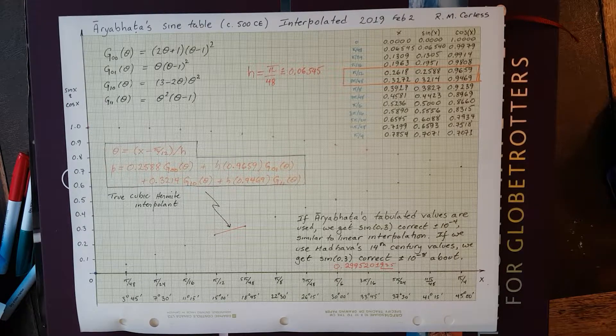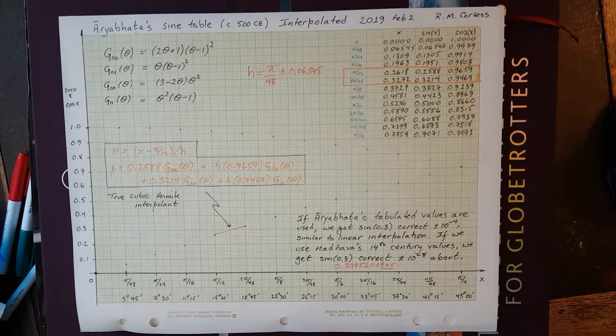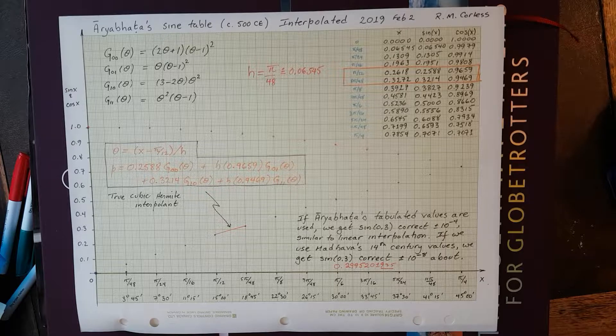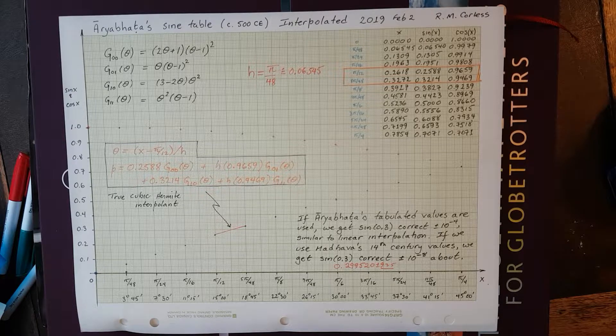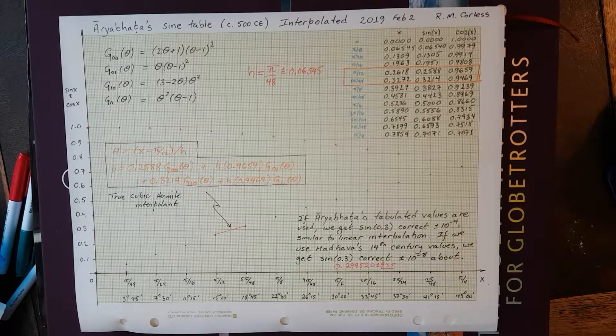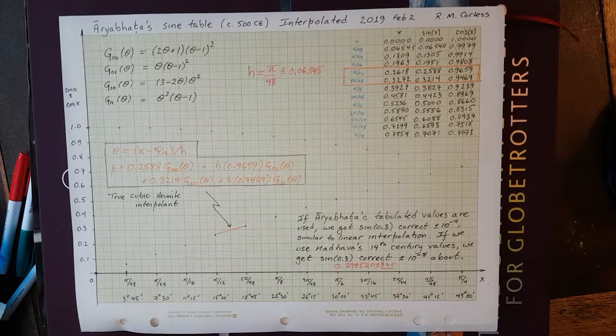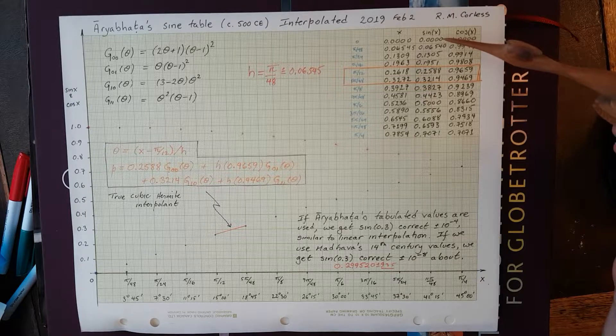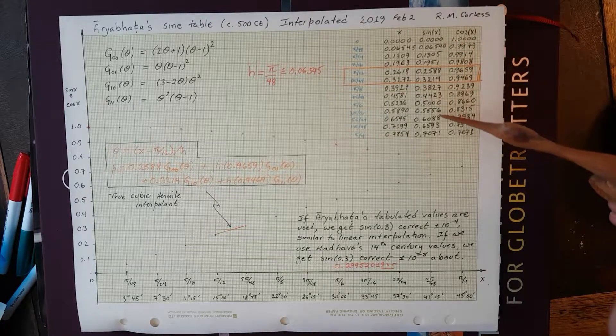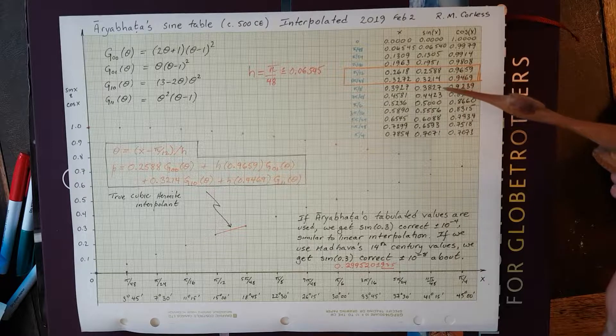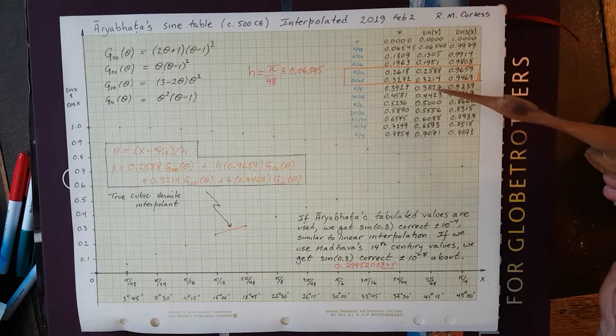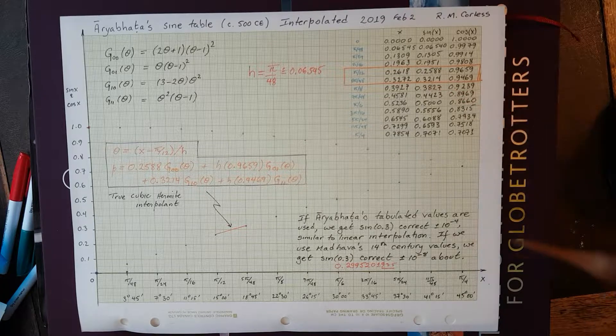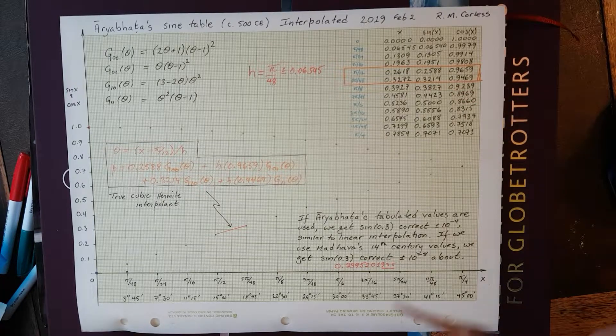Of course, he used different units and he didn't use the numerals. In fact, he encoded the table in letters or words in Sanskrit. So, it didn't look like this. Anyway, I have written down four-digit numbers. Aryabhata's table was accurate to four digits and in one of the places he was off by one decimal digit in the last part, but I don't know whether that's a transcription error or what that was.